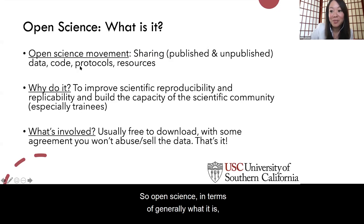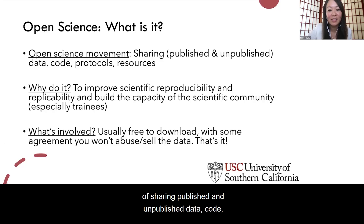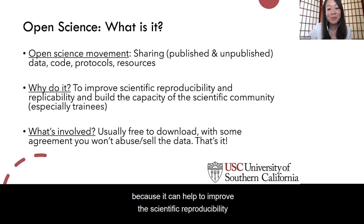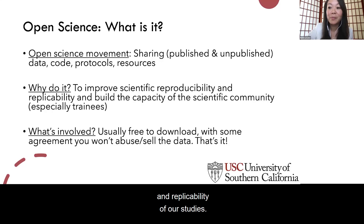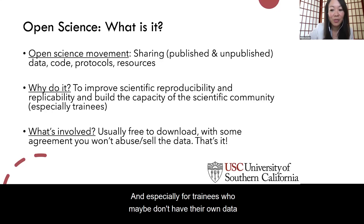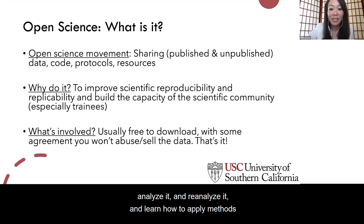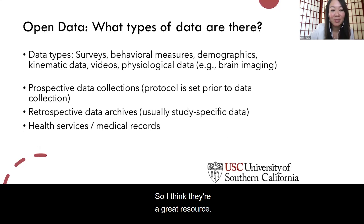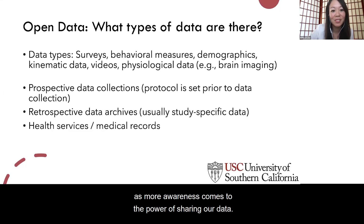The open science movement is the idea of sharing published and unpublished data, code, protocols, or resources so that other scientists can benefit from them. There's a lot of push to do this because it can help improve scientific reproducibility and replicability, but it also builds capacity in the scientific community — especially for trainees who don't yet have their own data. It gives them an opportunity to use existing data, analyze it, and learn how to apply methods to existing data sets. Open data sets are usually free to download, requiring only an agreement not to abuse or sell the data.